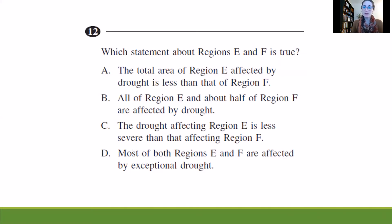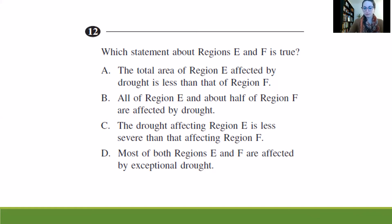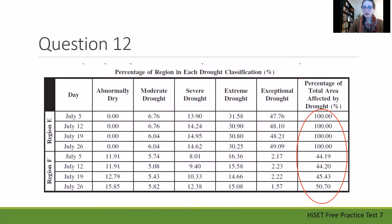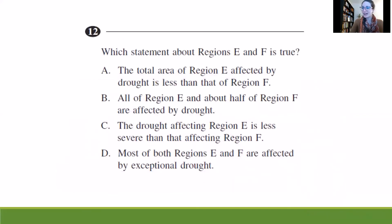For question 12, it says: which statement about regions E and F is true? They give us four statements and we have to evaluate each one. These are more difficult questions, so if you're short on time this is a good one to guess on and come back to later. Statement A says the total area of region E affected by drought is less than that of region F. Looking at the table, region E shows 100 percent and region F shows 44 to 50 percent, so letter A is not a good option.